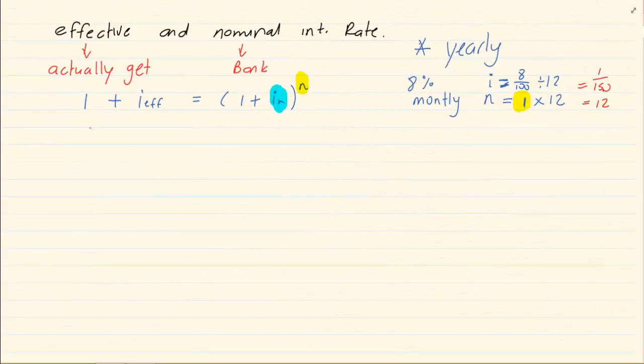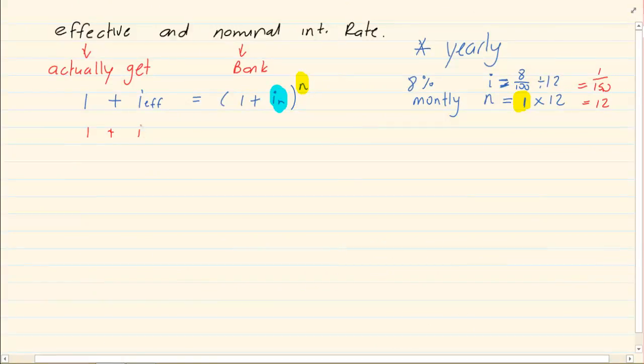Now substitute what we have. We have 1 plus the effective interest rate is equal to 1 plus our i is 1 over 150 to the power of 12. To get our interest rate alone, we are going to take the 1 over minus 1, which gives us 0.82999. Now notice I am not stopping at 82.